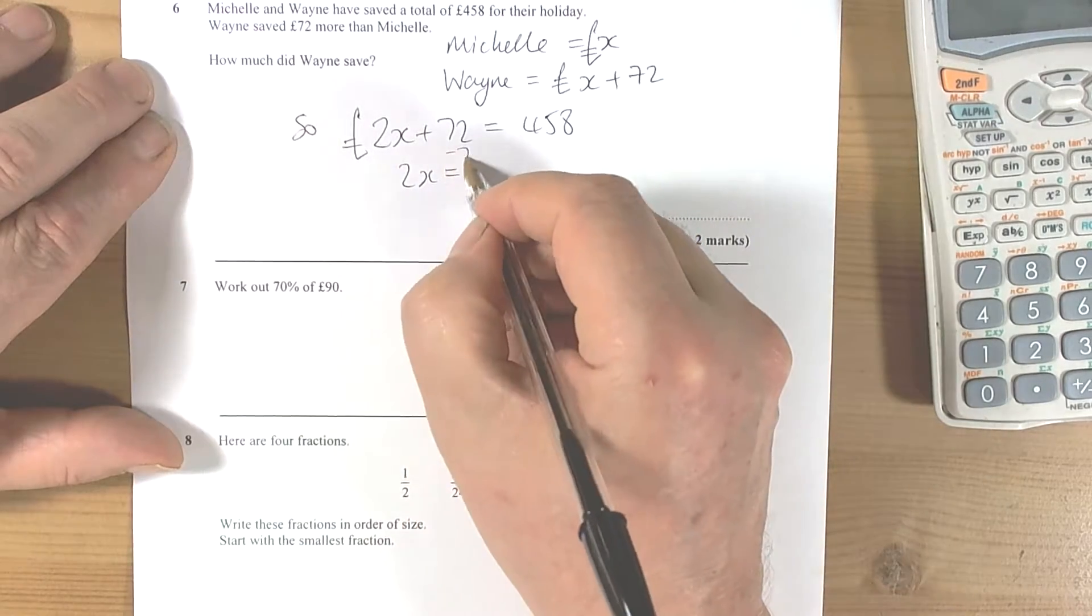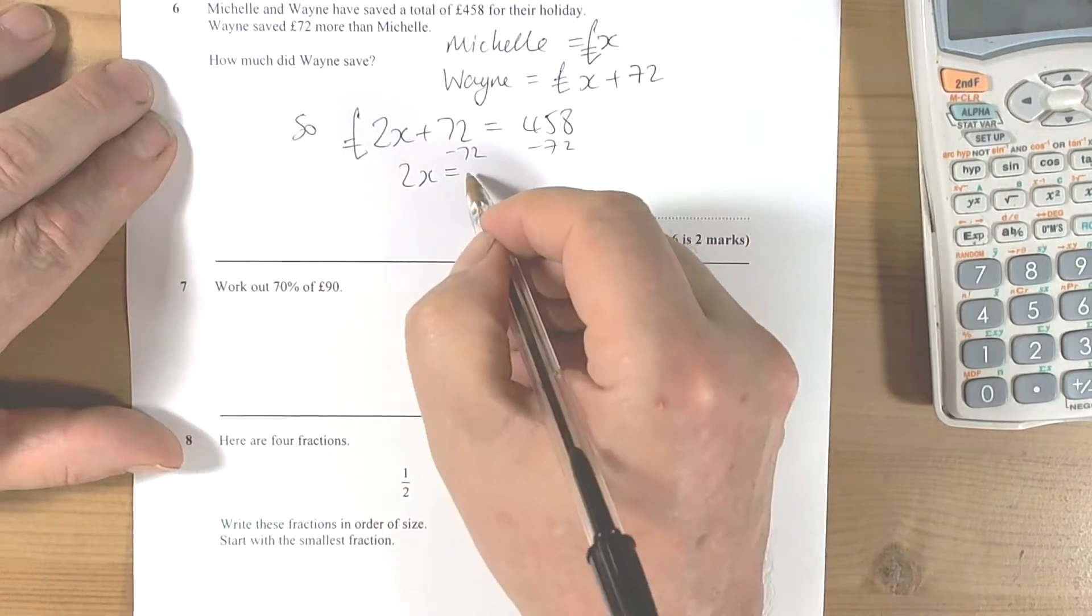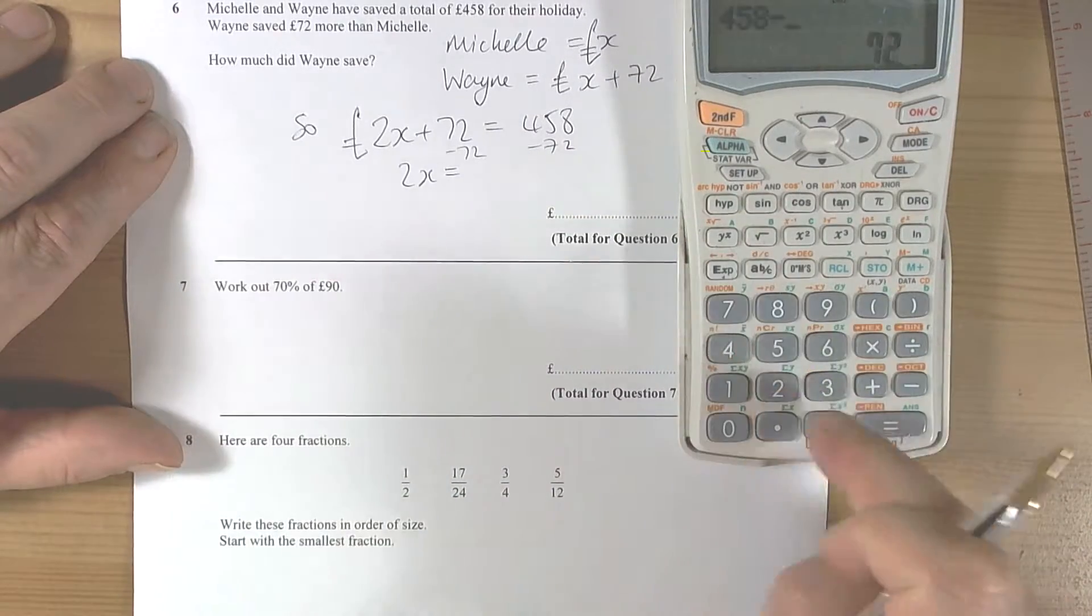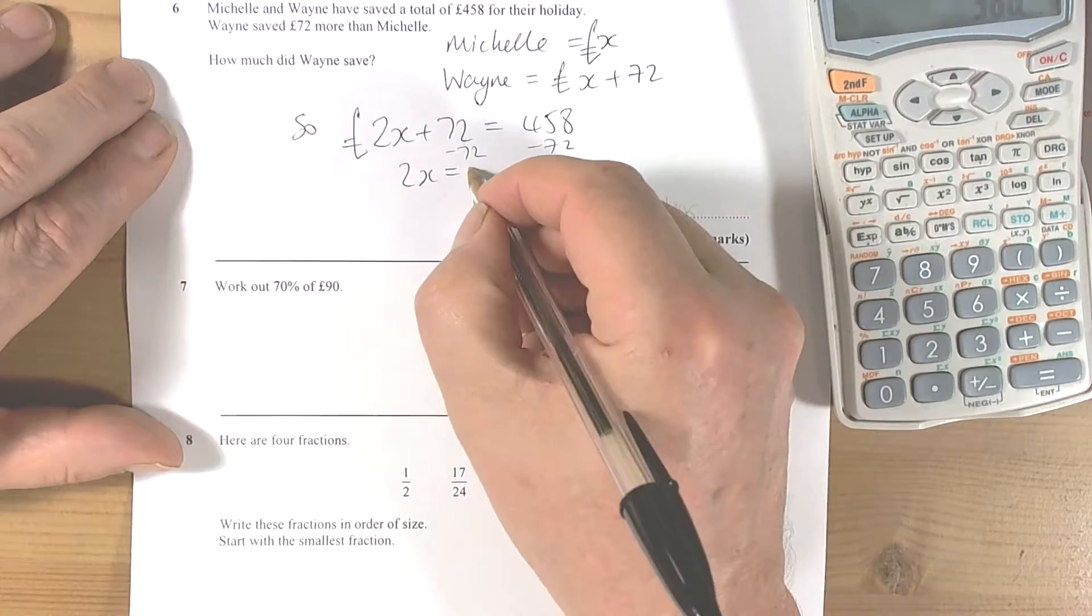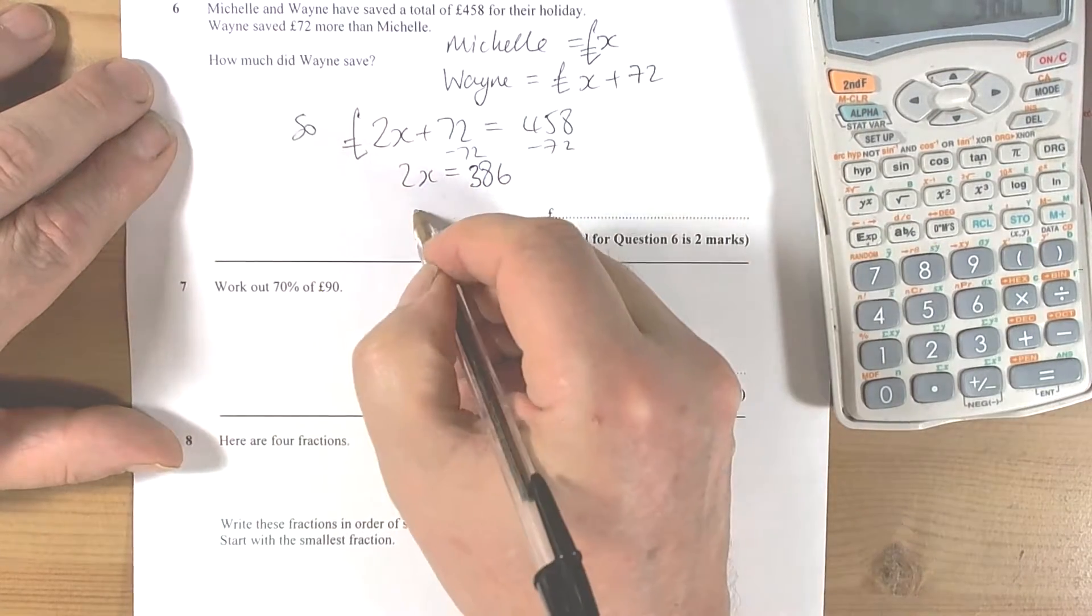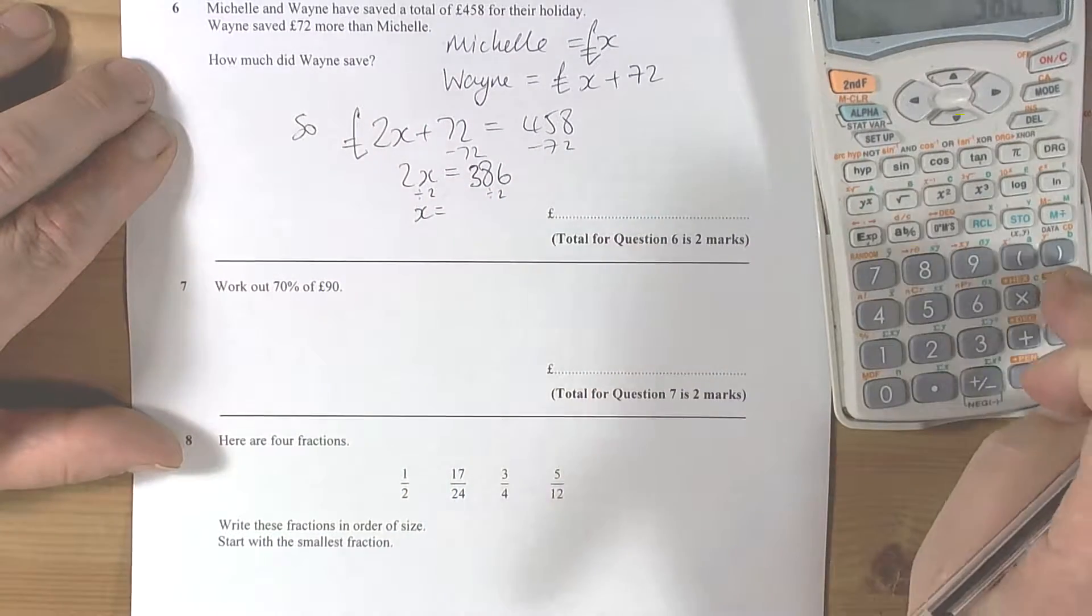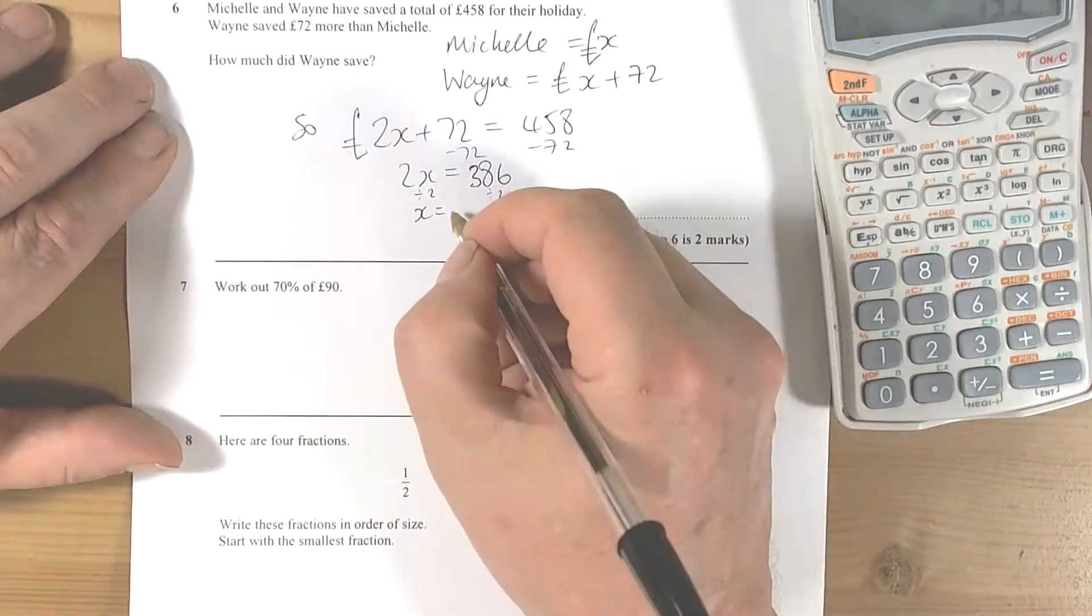So 2x is equal to, well we take away 72 from both of those. 458 minus 72 equals 386, so x is half of that. We divide by 2, so 193.